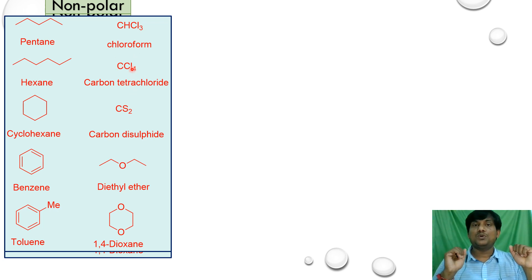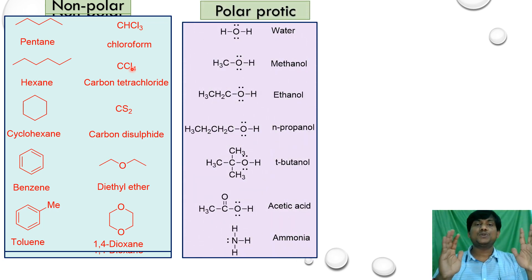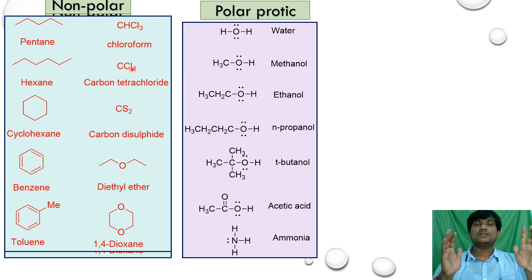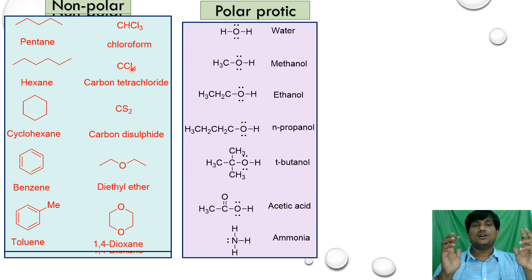Here we have some polar protic solvents. Polar protic solvents have OH or NH bonds. Water, alcohols, and carboxylic acids have OH bonds, so they are polar protic solvents. Ammonia, primary amines, and secondary amines also act as polar protic solvents.